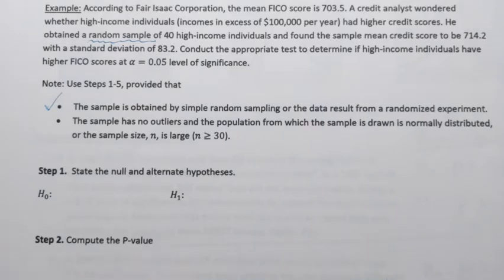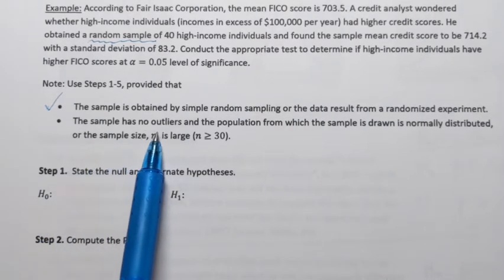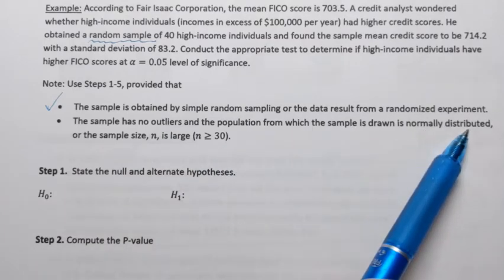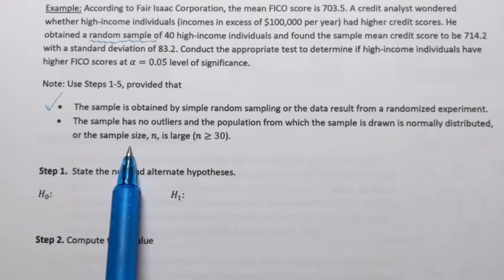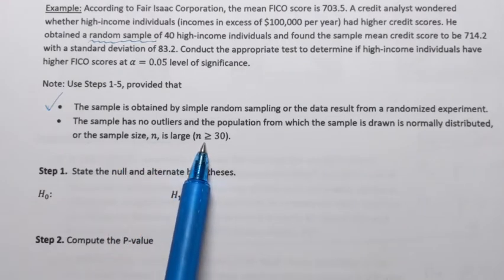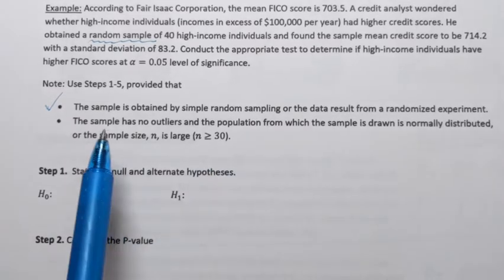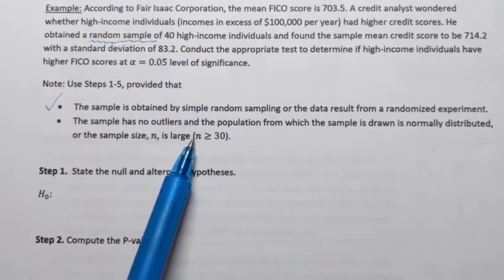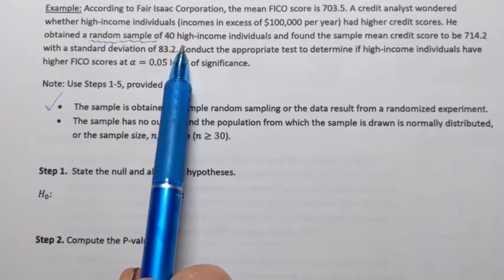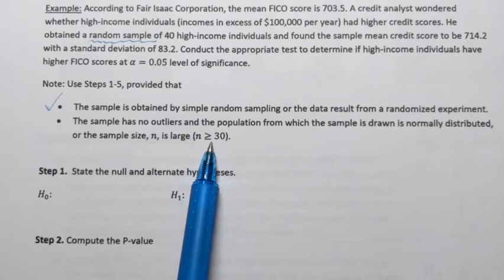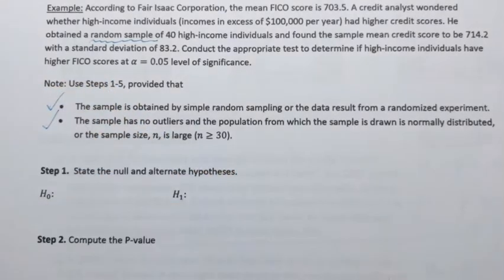And the second one is that the sample has no outliers, and the population from which the sample is drawn is normally distributed, or the sample size is large, with sample size being greater than or equal to 30. So we're kind of given options here, and the one that works for us is that our sample is considered to be large. It contains more than 30 individuals. So the second condition is also satisfied. That means that we can move on with the steps.